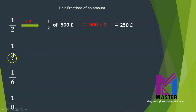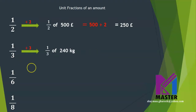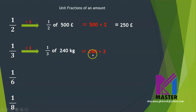Now let's talk about one third. If I asked you to give me a third of your pizza, it means you should divide your pizza into three equal parts first, then give me one part. So the meaning of one third is division by three. You are going to divide your amount by three first. For example, one third of 240 kilograms means divide 240 by three. 240 divided by three equals 80 kilograms.